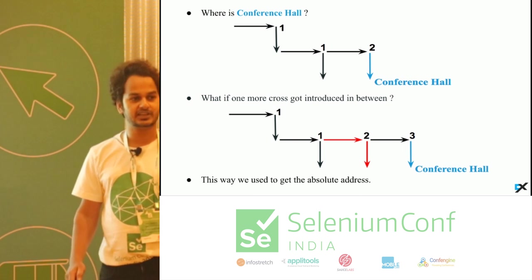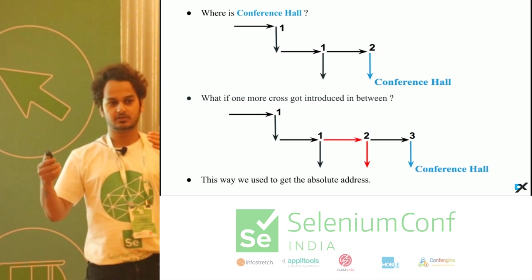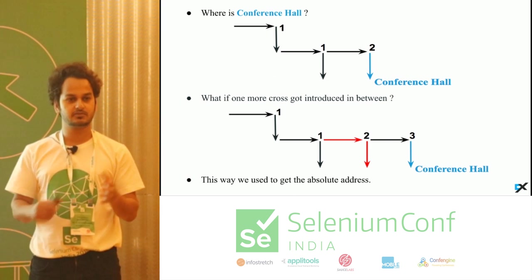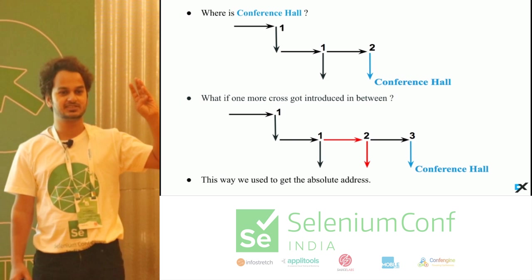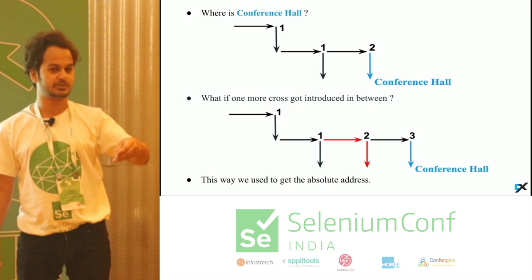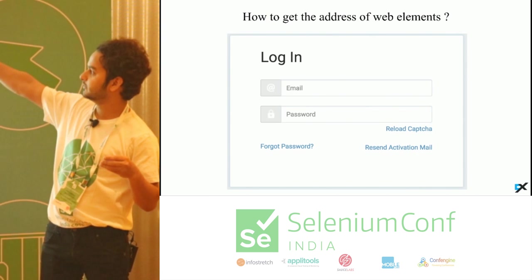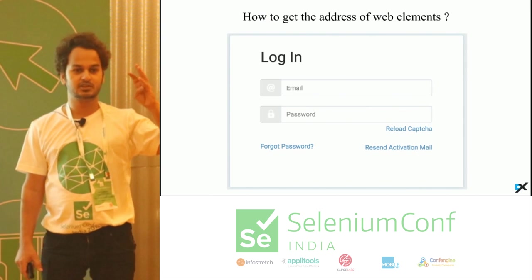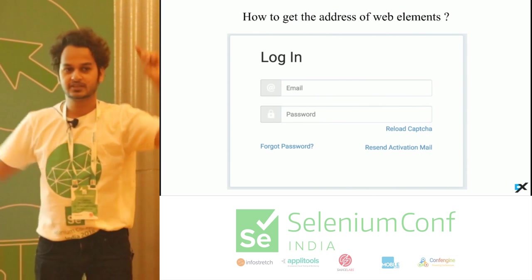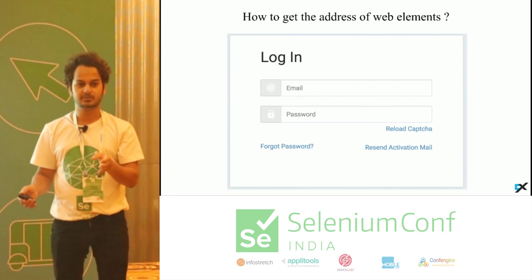So a similar problem we have in our UI. To perform any action here in the conference hall, first I need the address of this place, then I have to move my control there and then I can give the talk. Similarly in the UI, if we have to enter the email address on the email box, first we need the address of that email node, then we move our control there and enter the email address.